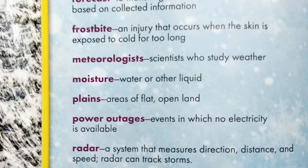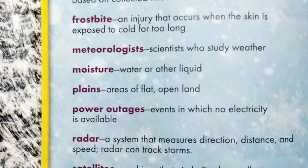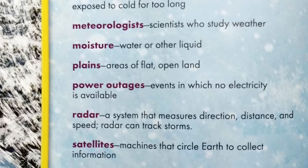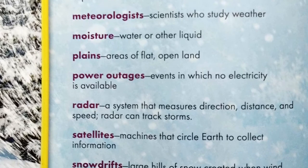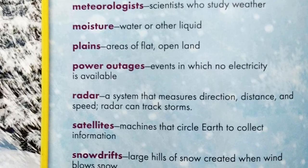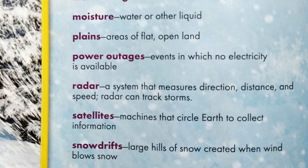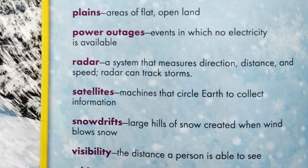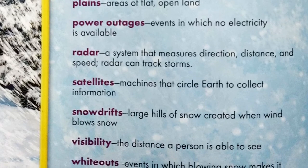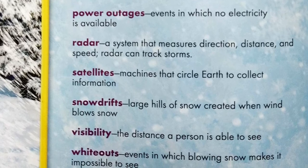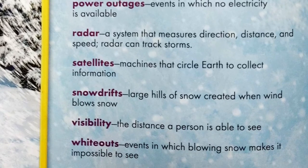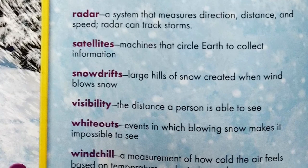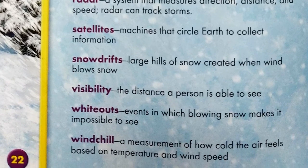Plains: area of flat, open land. Power outages: events in which no electricity is available. Radar: a system that measures direction, distance, and speed; radar can track storms. Satellites: machines that circle Earth to collect information. Snow drifts: large hills of snow created when wind blows snow. Visibility: the distance a person is able to see. Whiteouts: events in which blowing snow makes it impossible to see.